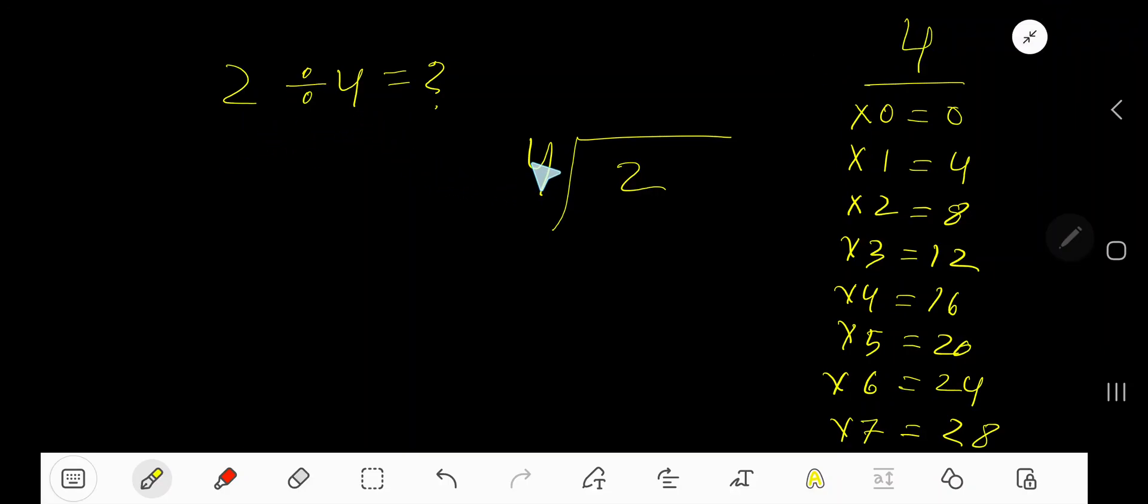2 divided by 4. Here 4 is a divisor so we need the multiplication table of 4.